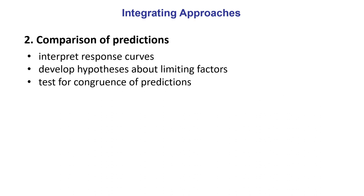The second, slightly more powerful level of integration is where you develop both a statistical model and a mechanistic model for the same species and make comparisons. That's really interesting. It helps you interpret response curves, and if you think you've hit on a mechanism and understand roughly what's going on, by comparing the response curves and looking for congruence in the predictions, you can enhance that understanding and potentially make your conclusions stronger.